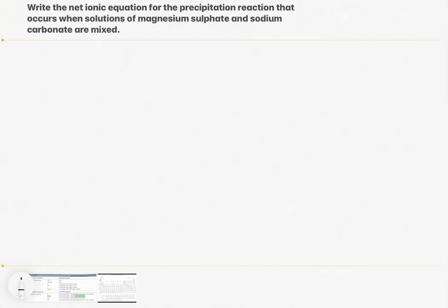In this video we are looking at ionic compounds and precipitation reactions. We'll look at the following question: write the net ionic equation for the precipitation reaction that occurs when solutions of magnesium sulfate and sodium carbonate are mixed.